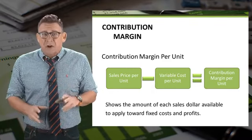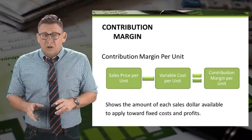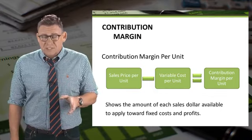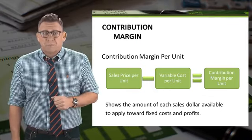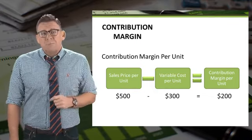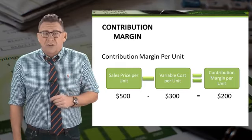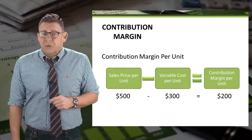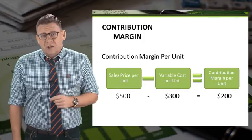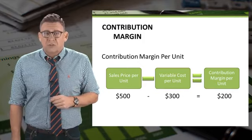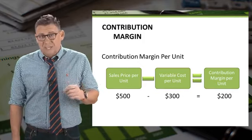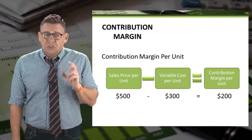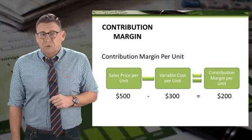It's the amount of each sales dollar that is available to cover fixed costs and normal profits. In this example, the price per unit is $500 and the variable cost per unit is $300. Thus, the contribution margin is $200 per unit. When a company sells one more unit, it gets an additional $200 of contribution margin.